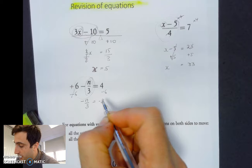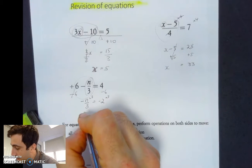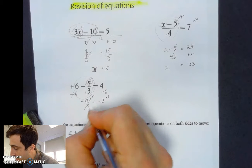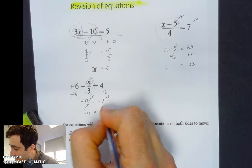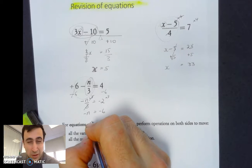So now we have minus n divided by 3 equals negative 2. I need to get rid of the divide by 3, so multiply by 3. We end up cancelling out. Minus n equals minus 2 times 3, which is minus 6.